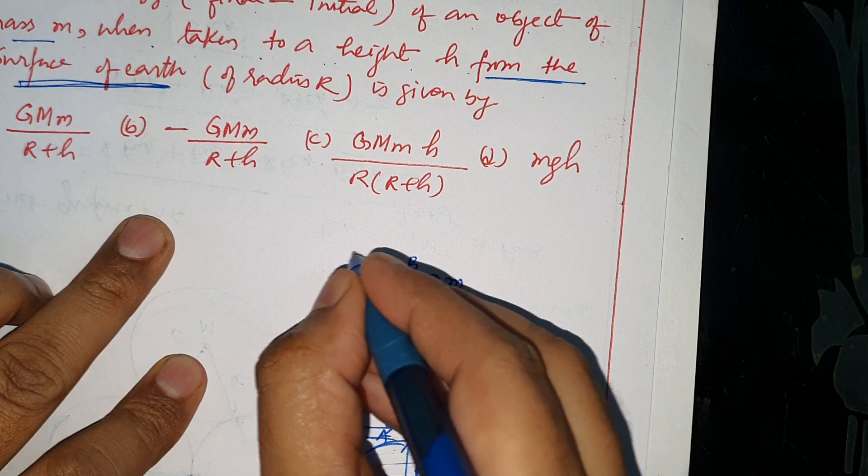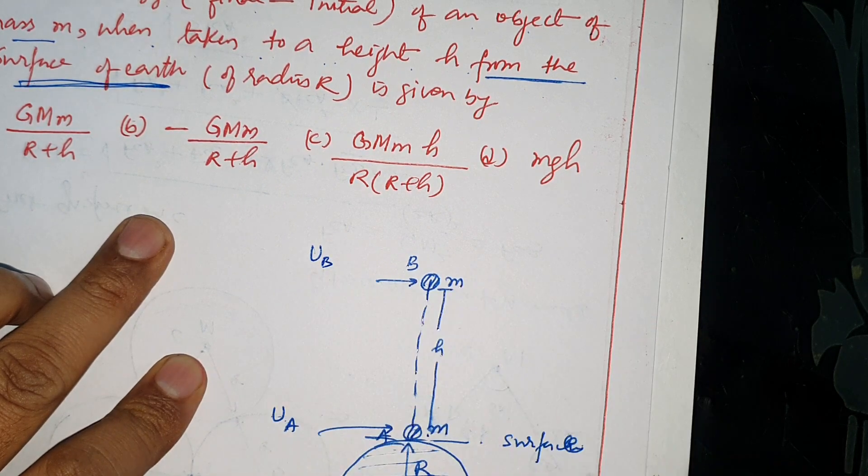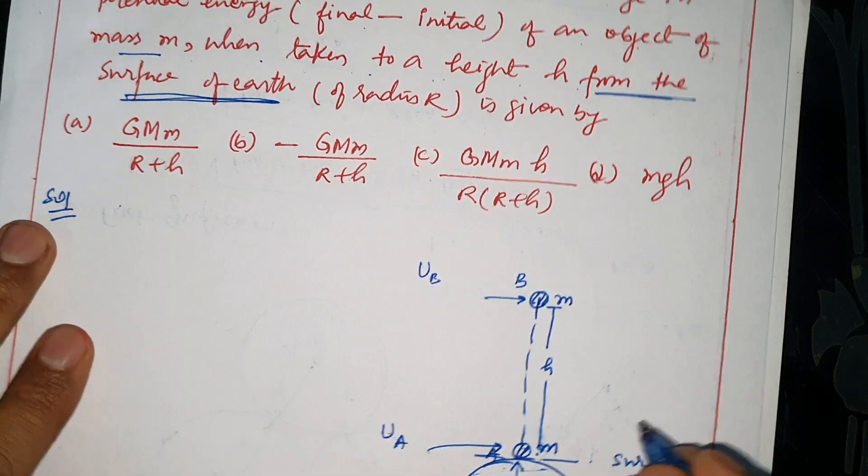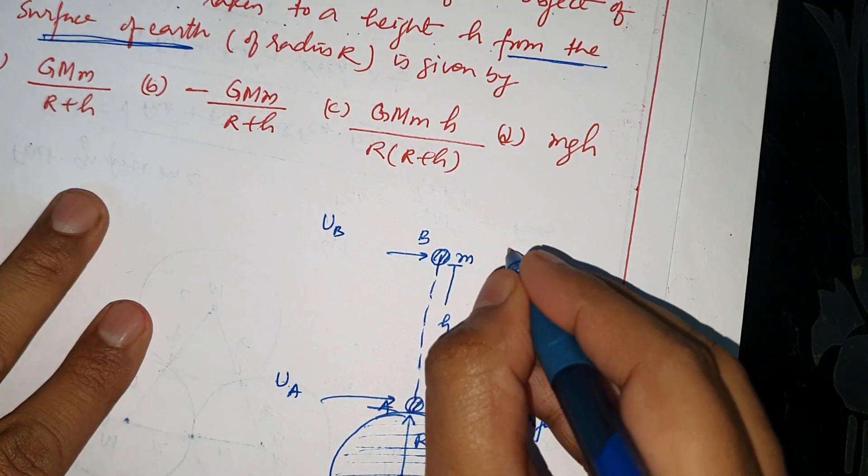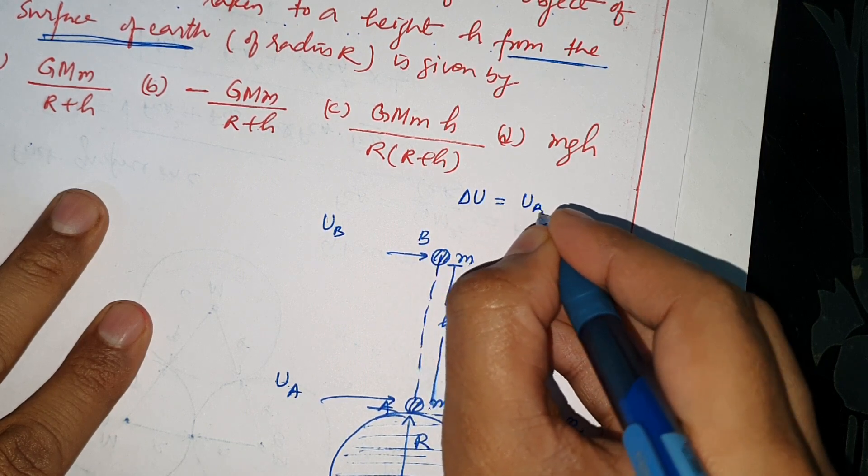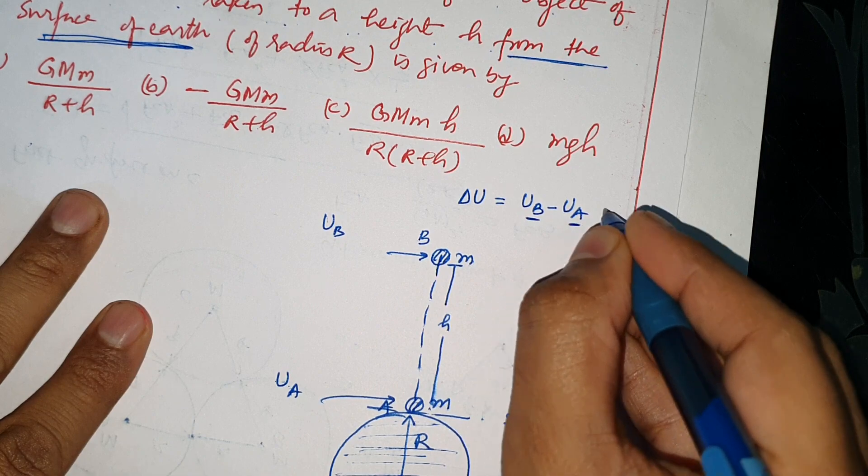At this point the potential energy is Ub. The question asks for change in potential energy, delta U from here to here. That means final minus initial - this is final, this is initial.